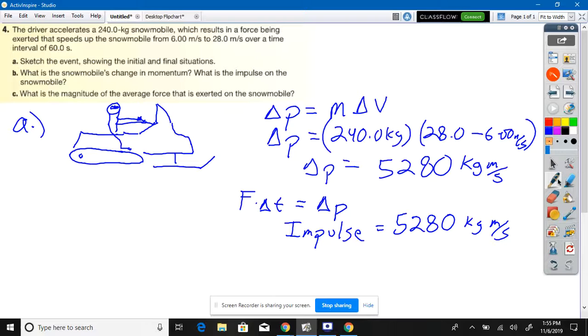What is the magnitude of the average force that is exerted on the snowmobile? It's the change in time times what? Force. Impulse is force times change in time. What is it equal to? Change in momentum. Since impulse is force times change in time and it's equal to 5,280, and we have a change in time of 60 seconds, how do we find the force? Impulse divided by change in time.